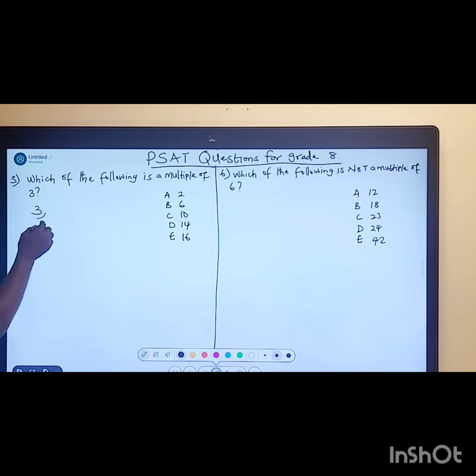Three times two will give us six. Three times three will give us nine. Three times four will give us twelve. Three times five gives us fifteen. Three times six will give us eighteen.